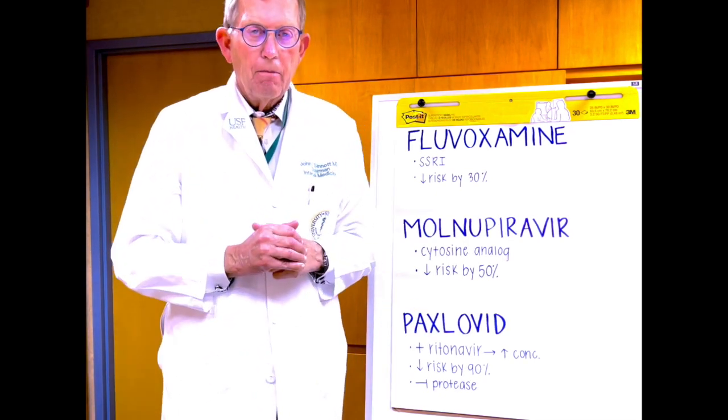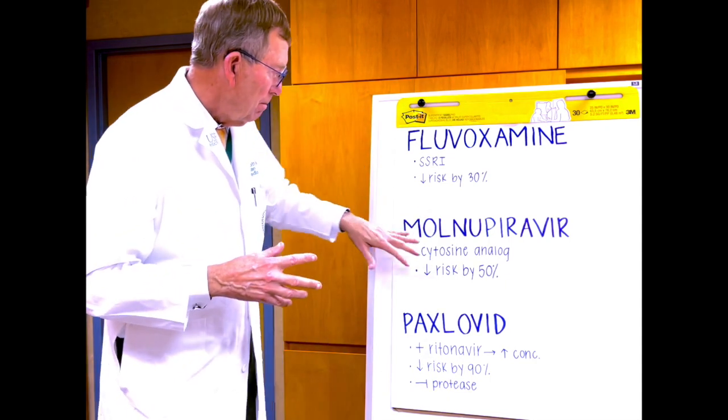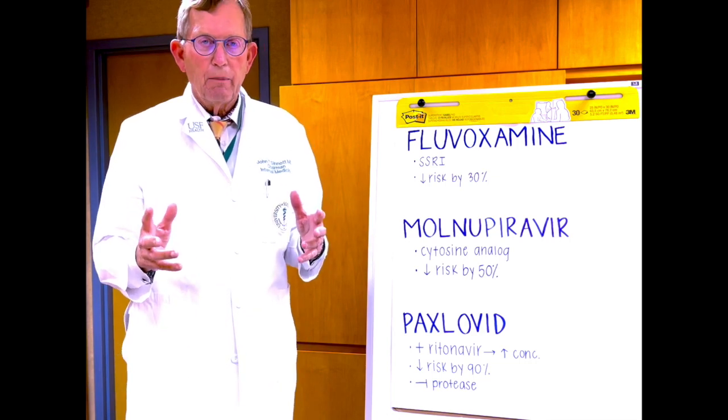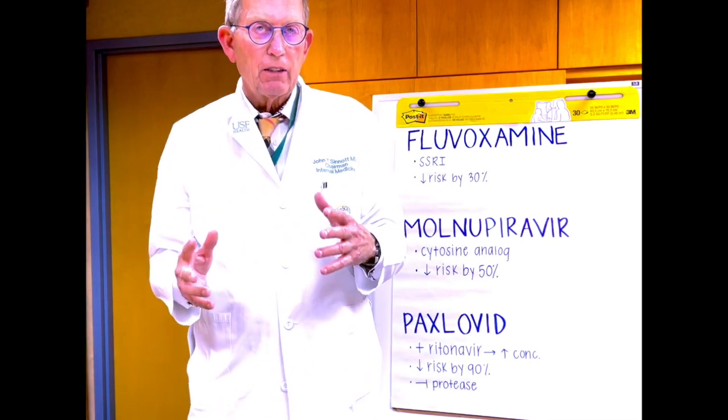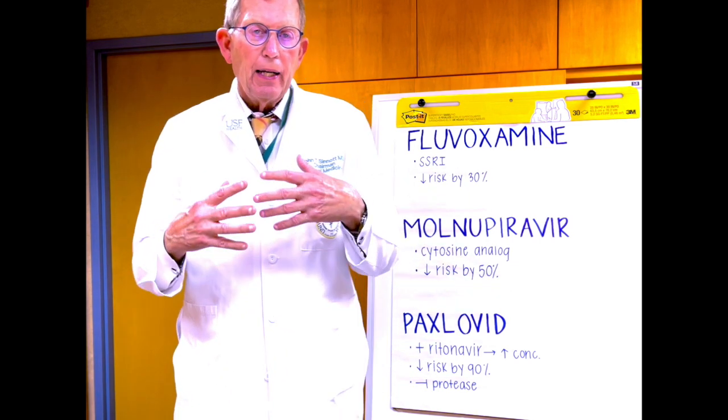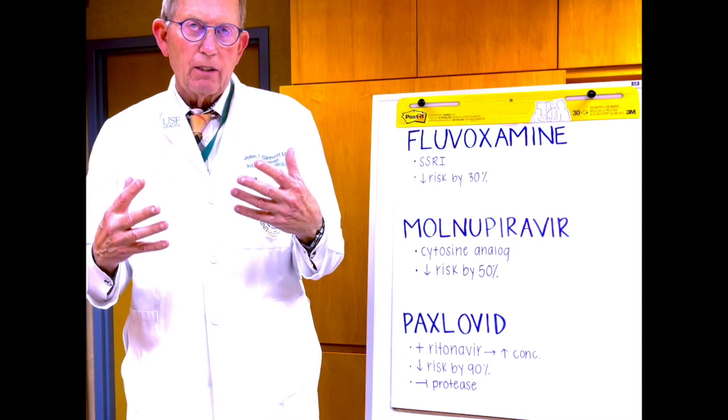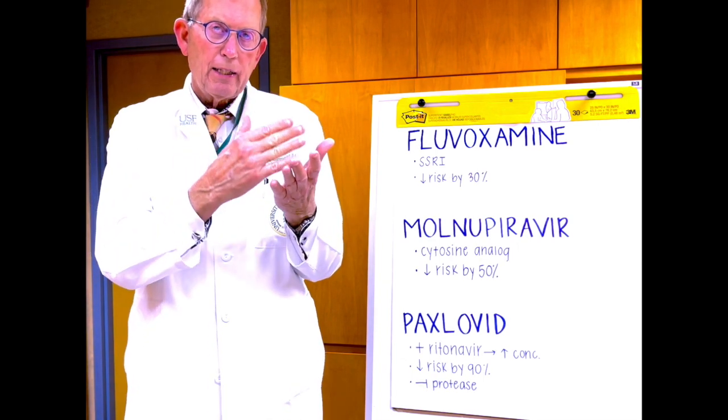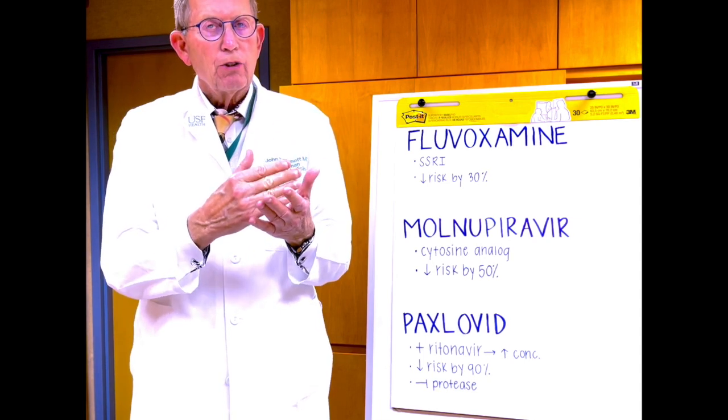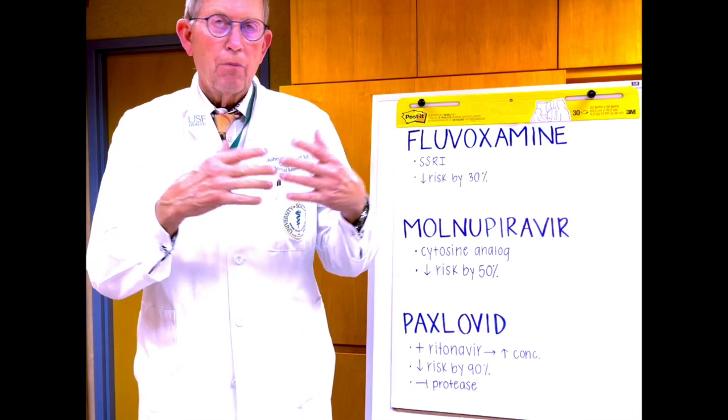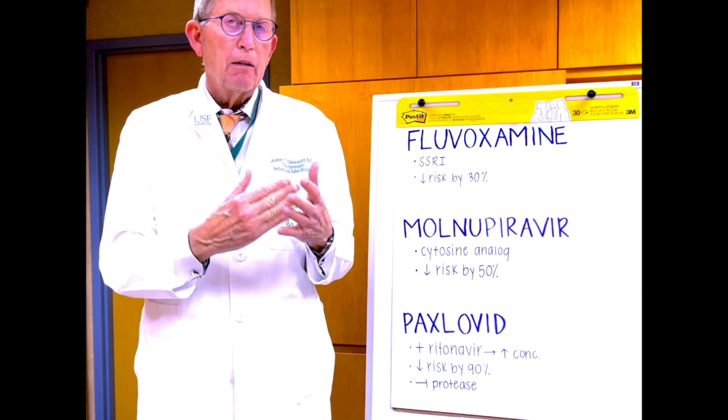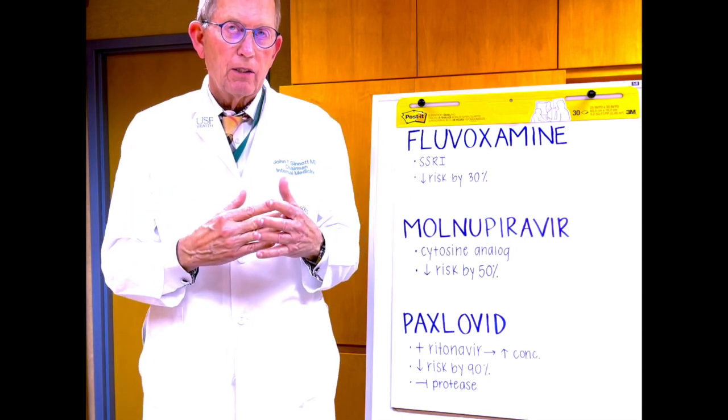Next. Now, Molnupiravir, Merck's new product, is truly a wonder drug in many ways. It's 50% effective at reducing hospitalization and death. It's an analog of cytosine. Cytosine is a molecular building block for nucleic acids. It introduces what we call an error catastrophe. Once you try to plug that in, it breaks open inside part of the cell and viral replication stops.